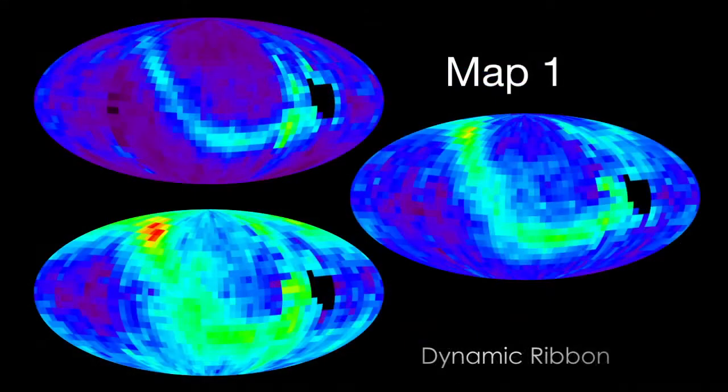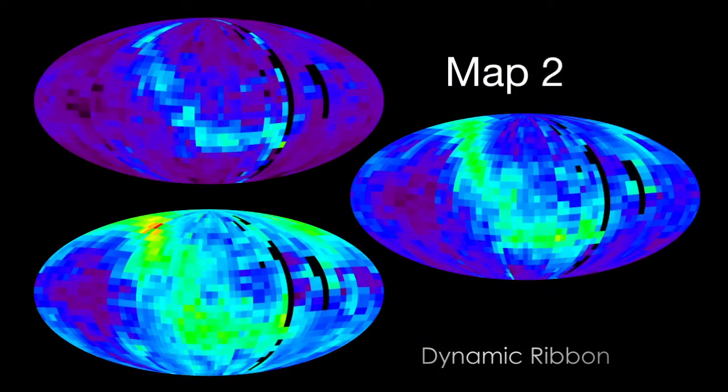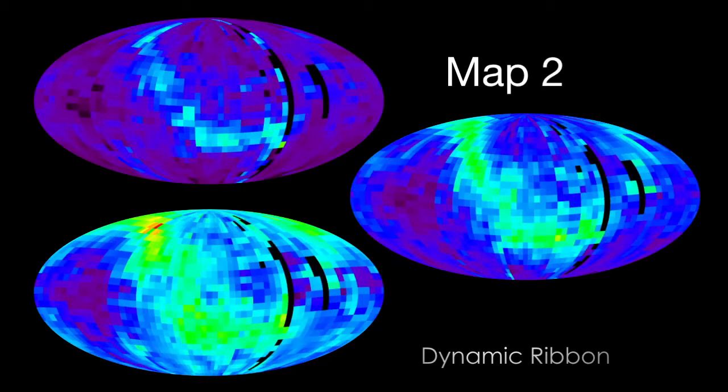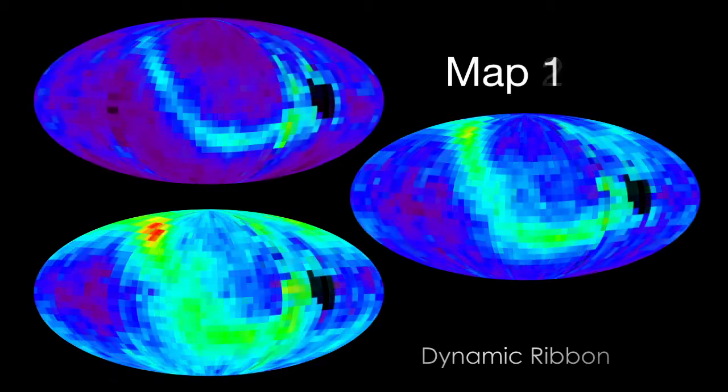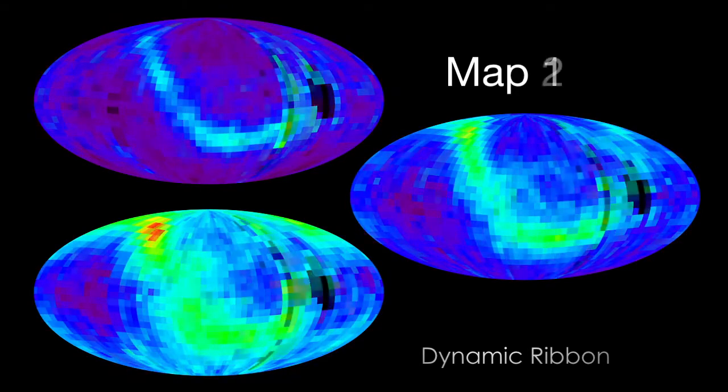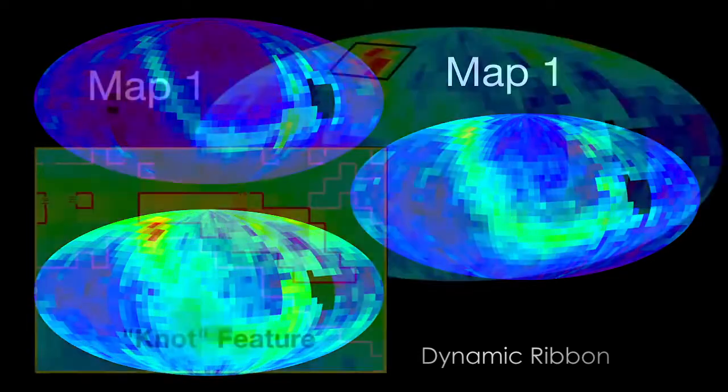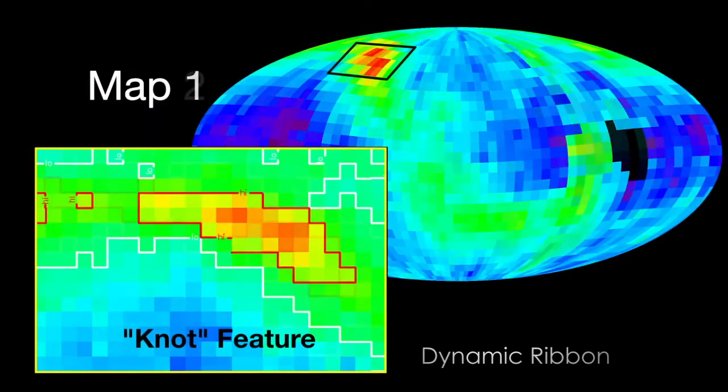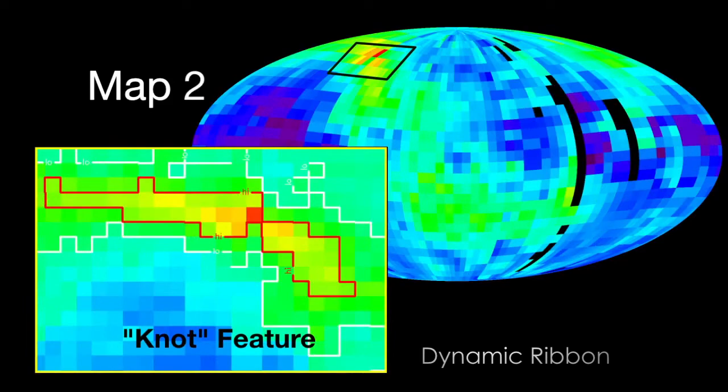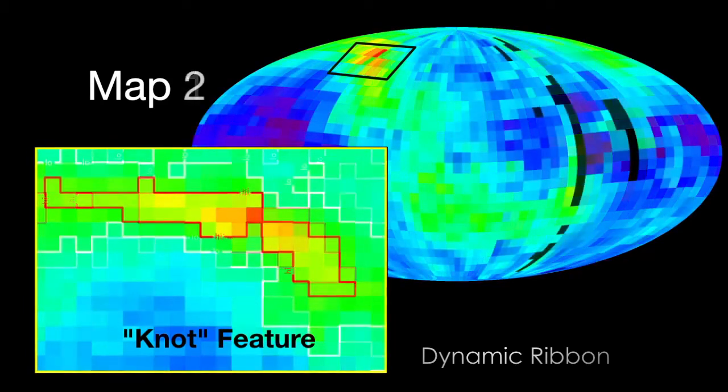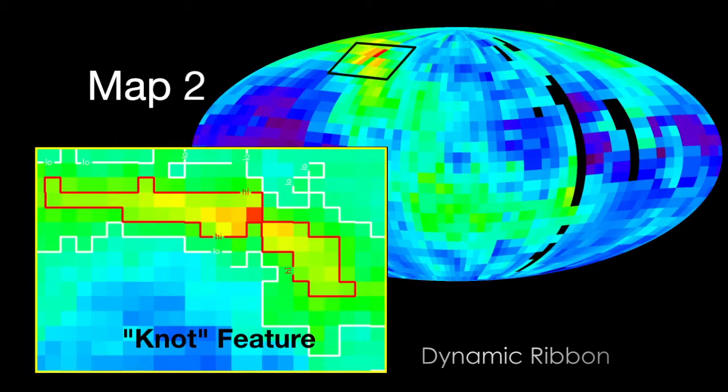New data from NASA's Interstellar Boundary Explorer reveal that conditions at the edge of our solar system may be much more dynamic than previously thought. This second set of all-sky maps show the evolution of the interstellar boundary region. The mysterious ribbon feature at the nose of the heliosphere has changed shape, and a knot-like feature has formed. This variation over time is forcing scientists to try to understand how the heliosphere can be changing so rapidly.